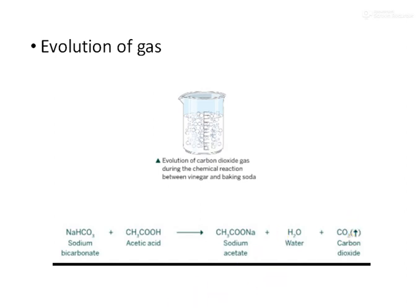Similarly, the presence of hydrogen gas in a reaction can be confirmed because it burns with a pop sound when a burning splint is held near it. Some gases have a distinct odor and can be easily identified. For example, ammonia gas has a very pungent smell. By different methods, you can identify the presence of gas in a chemical reaction.